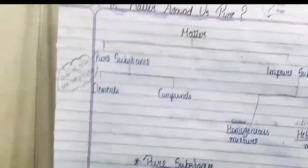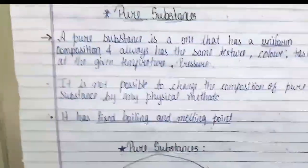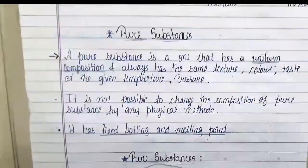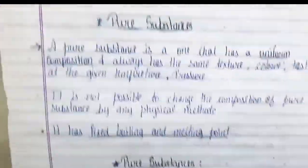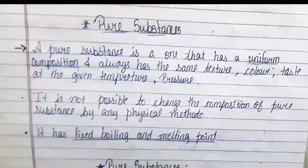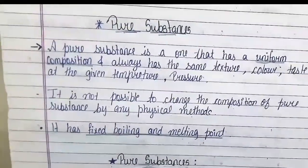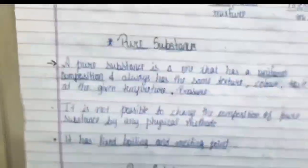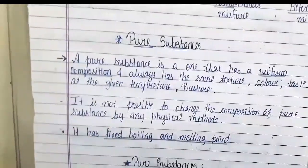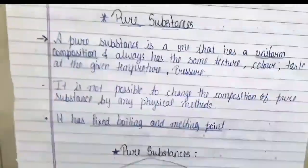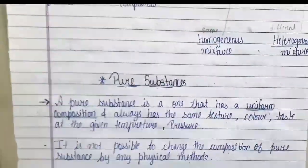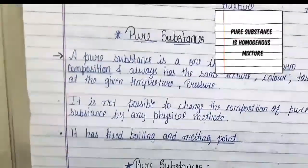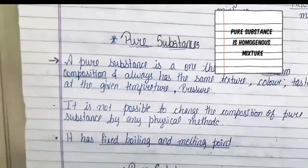Now we'll move further and learn more about pure substance. A pure substance is one that has uniform composition — uniform composition means the same throughout, which means homogeneous. So from this, I can conclude that pure substance is a homogeneous mixture.